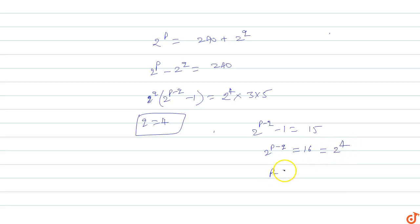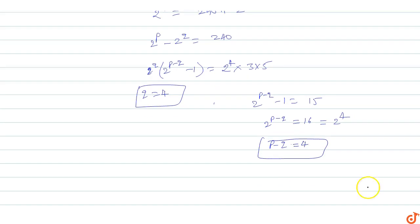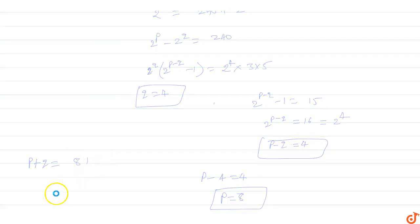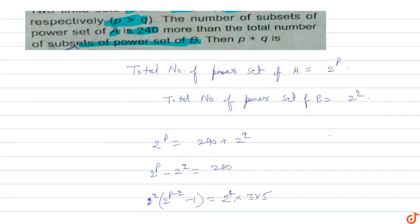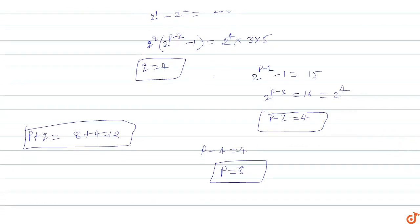Comparing the exponents, P minus Q equals 4. Since Q equals 4, substituting gives P minus 4 equals 4, so P equals 8. Therefore P plus Q equals 8 plus 4, which equals 12. So the answer is P plus Q equals 12, with P equals 8 and Q equals 4.